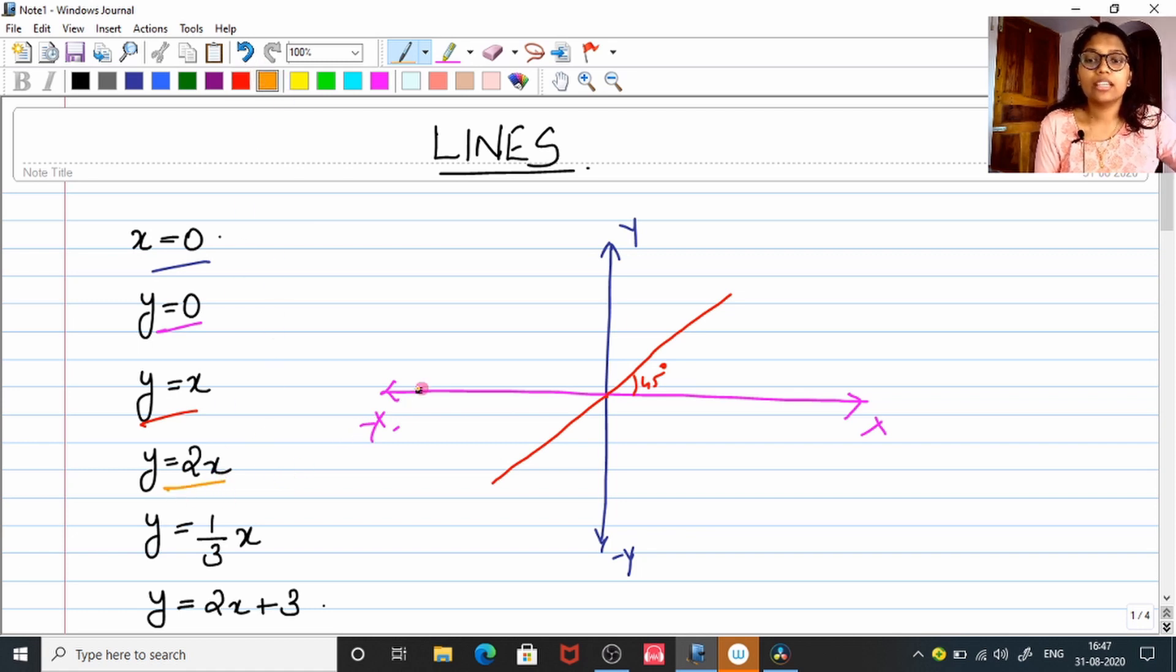Y = 2x is another inclined line, but here you can see that the x coefficient is greater than 1. Here the coefficient was 1, here it is greater than 1, so we will be having the slope which is much more greater than the previous line.